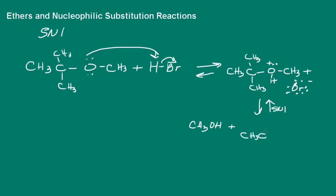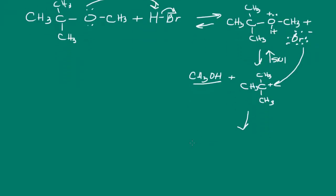And this is a tertiary carbocation, which is very stable. And these reactions, as long as a carbocation can form, or a stable carbocation can form, these reactions involving the cleavage of ether will follow an SN1 mechanism. So, once the leaving group departs, again, we have the alcohol, and then the bromide ion will combine with our carbocation, and we end up with our alkyl halide and, of course, the alcohol.